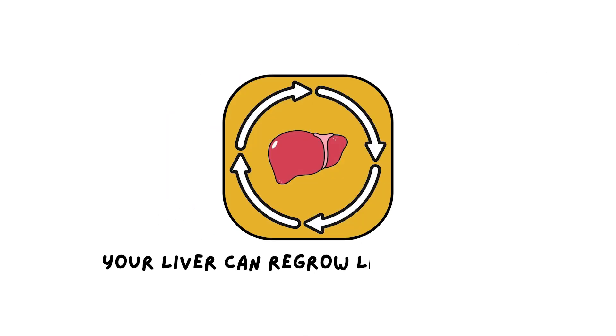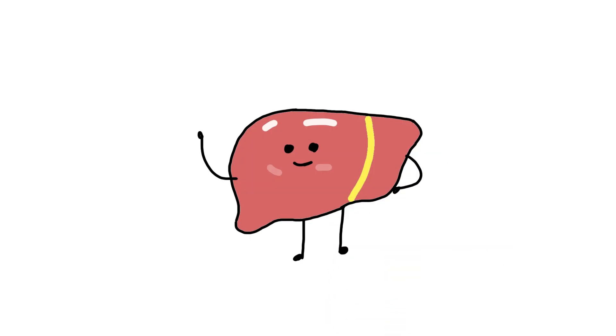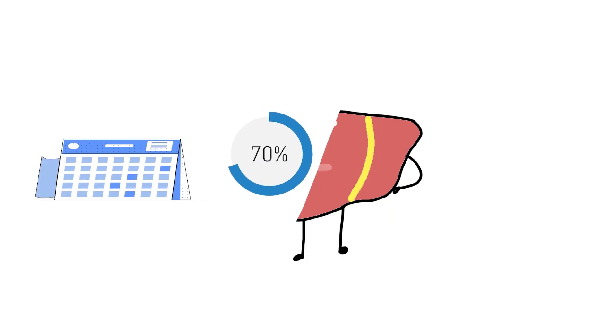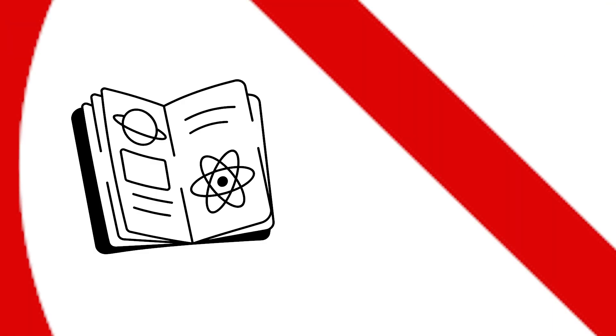Your liver can regrow like a starfish. If you ever doubted that humans have a bit of superhero DNA, meet your liver, the only internal organ that can regrow itself. You could lose up to 70% of it in surgery or injury, and in a matter of weeks it can regenerate back to nearly its original size. That's not fiction, it's regenerative biology at work.